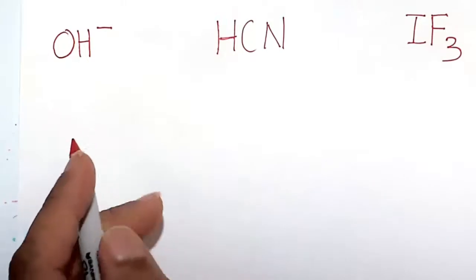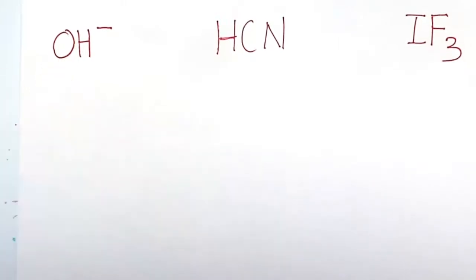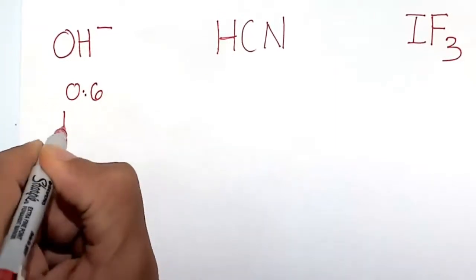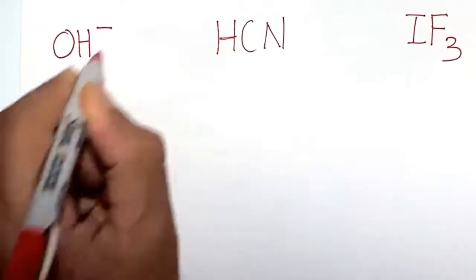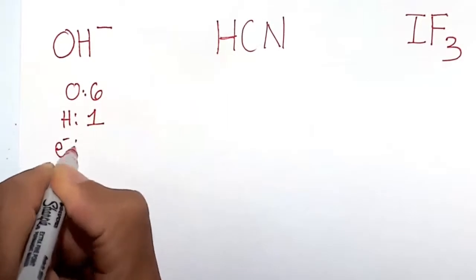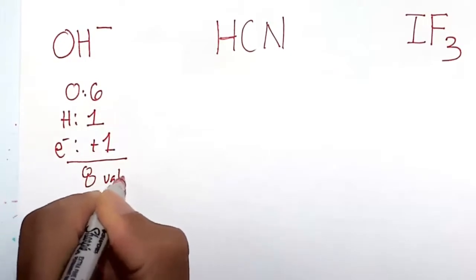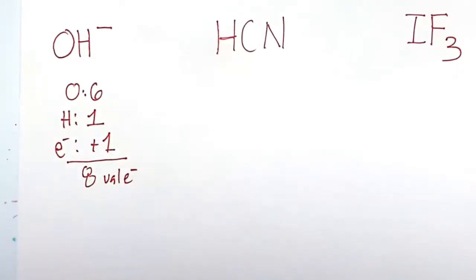Let's draw the Lewis structures of the hydroxide ion, so this is part of your flashcards. Oxygen is happy at 6, hydrogen is happy at 1, and then that minus sign means we've actually gained an electron. So we've got to put 8 valence electrons around the hydroxide ion.